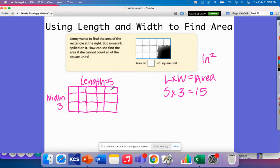I would have 1, 2, 3, 4, 5, 6, 7, 8, 9, 10, 11, 12, 13, 14, 15. I would have 15 tiles here, even though I cannot see some of them. I do know my length and width so I can find the area.